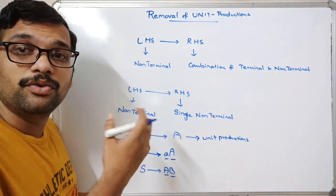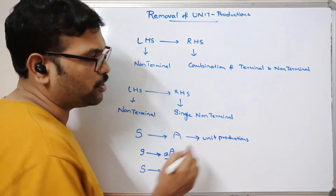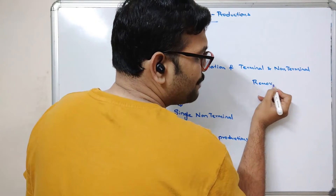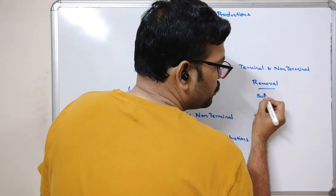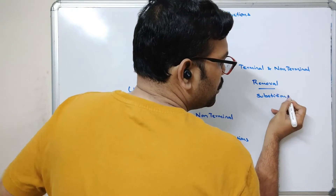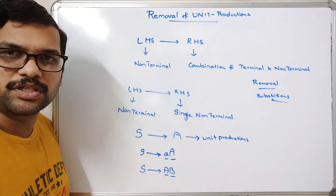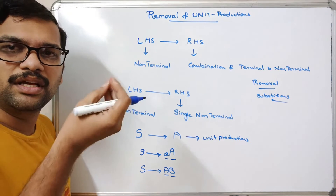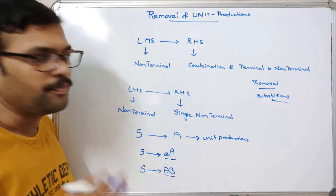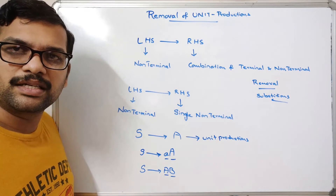So we need to identify unit productions in the CFG and remove them. The removal is done by substitution — substituting the non-terminal with that particular production. I'll show you an example so you'll understand it clearly.